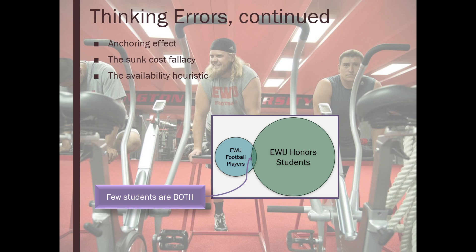Probabilistically, we should not guess that they are in that tiny sliver of overlap. If we only get to pick — honor students or honor students who play football — we have a much better chance of being correct if we assume they are one thing rather than the conjunction of two things. It's much more likely they're in the big circle called EWU honor students than in that little overlapping sliver.